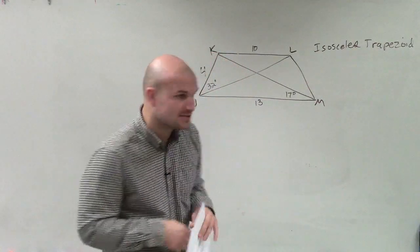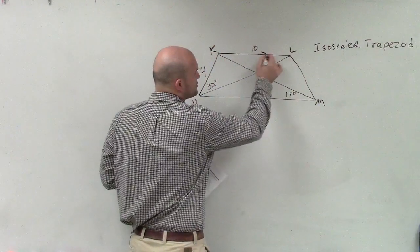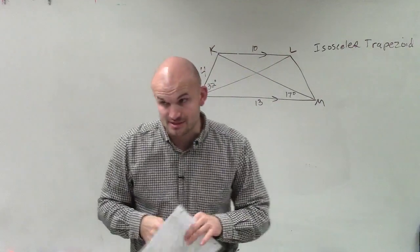So the important thing about an isosceles trapezoid, we know that since it's a trapezoid, we have one set of parallel sides. And those are going to be our bases, right?